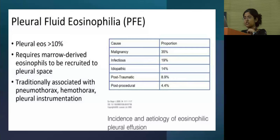The basic pathogenesis that is associated with pleural fluid eosinophilia is that due to the production of cytokines secondary to a hemothorax, pneumothorax, or basically due to an instrumentation, there are cytokines that attract these eosinophils to cross the barrier and get accumulated in the pleural fluid. The most important causes that will be considered are malignancy, infections, idiopathic, and post-traumatic and post-procedural.